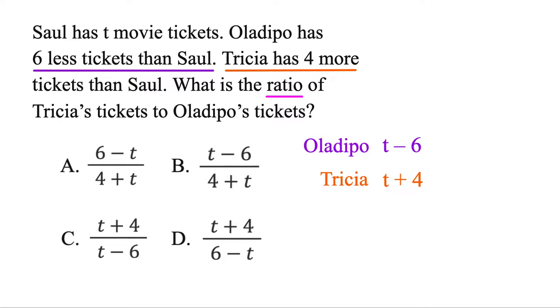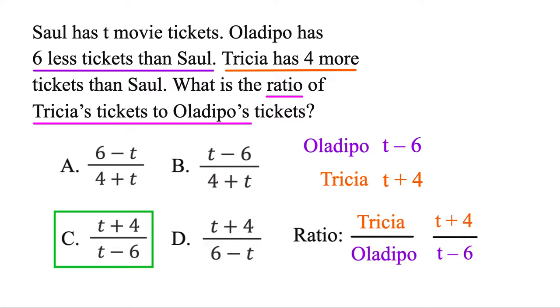And then finally, we want the ratio of Tricia to Oladipo. So Tricia is up top, we'll put them in that order. Bada boom, it's got to be C. This problem is based on algebraic expressions, so I'll put a link to that video if you want to practice those.